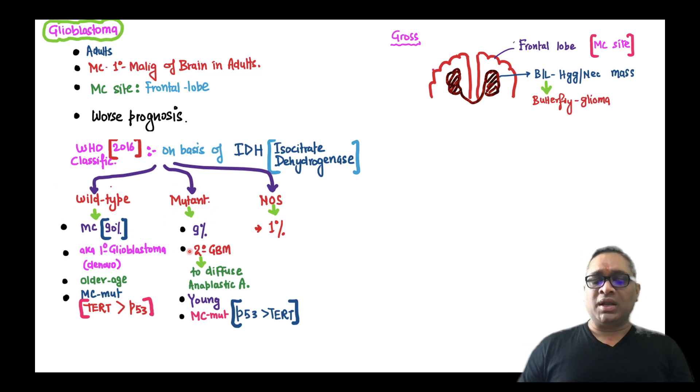Mutant type, the less common type, is seen in 9% of the cases and they are also known as secondary glioblastoma because they will be secondary to diffuse anaplastic astrocytoma. Usually, these patients will be younger and they will be having most common mutation of P53.